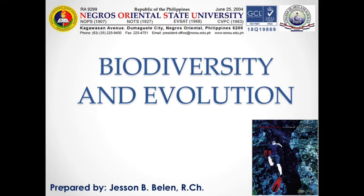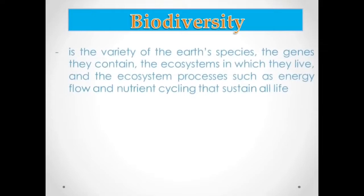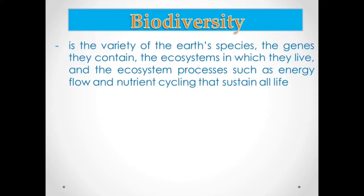Now let's move to biodiversity and evolution. Biodiversity is found in genes, species, ecosystems, ecosystem processes, and it is vital to sustain life on Earth. Biodiversity is the variety of the Earth's species, the genes they contain, the ecosystems in which they live, and the ecosystem processes such as energy flow and nutrient cycling that sustain all life.